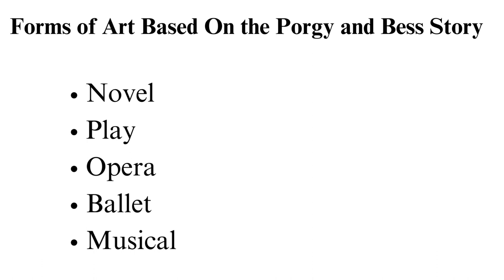In 1935, an opera was produced from this story. The directors were DuBose Hayward and George Gershwin. Again, Todd Duncan and Ann Brown took the roles of Porgy and Bess. Alvin Ailey choreographed a ballet from this story, first performed in 1976. In 1976, Fred Ebb and John Kander produced a musical backed with a book and lyrics. Sammy Davis took Porgy's role, while Lonette McKee was Bess.